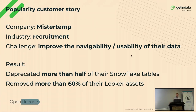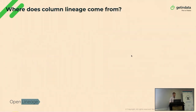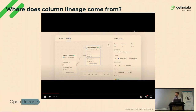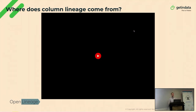Mr. Temp was able to deprecate more than half of their Snowflake tables and more than 60% of their Looker assets. Column-level lineage is also available in Atlan. And there's a nice touch when debugging: you can see where the column lineage is coming from — whether it's a SQL query, Spark job, etc. So when debugging an issue, it's really easy to see the source.